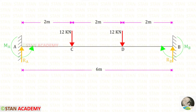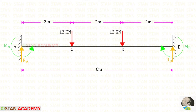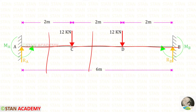We know that at the fixed ends there will be moments. At point A we have the moment MA and at point B we have the moment MB. Also we have the vertical reactions RA and RB. In this beam there are three different parts: AC, CD, and DB. So we have to make three sections — one section in AC, one section in CD, and one section in DB.